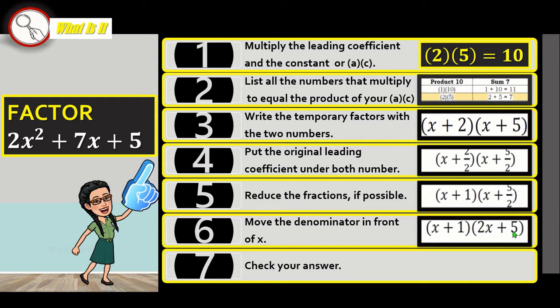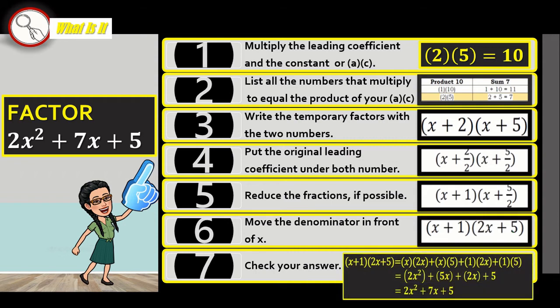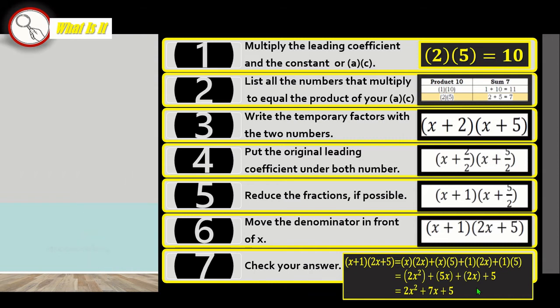And lastly, step number 7: You check your answer by distributing or by the distributive property of multiplication. X times 2X, X times 5, 1 times 2X, 1 times 5. And then we simplify and combine like terms. Yes, that's it. We get our original expression 2X squared plus 7X plus 5.